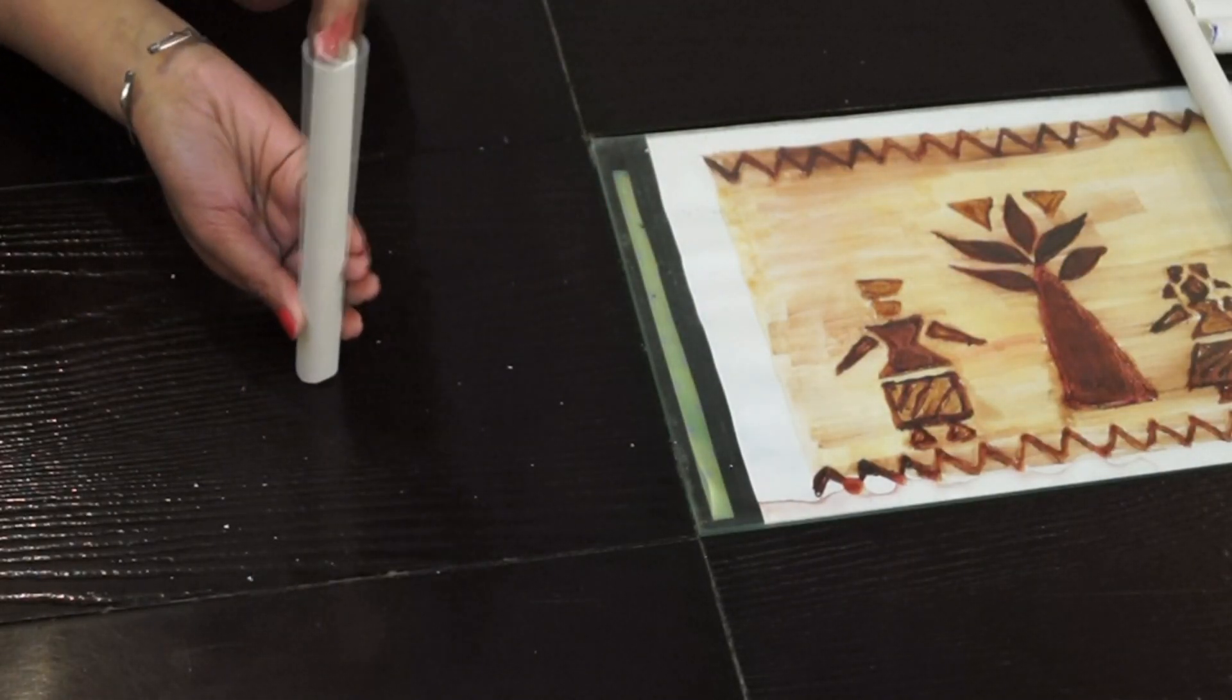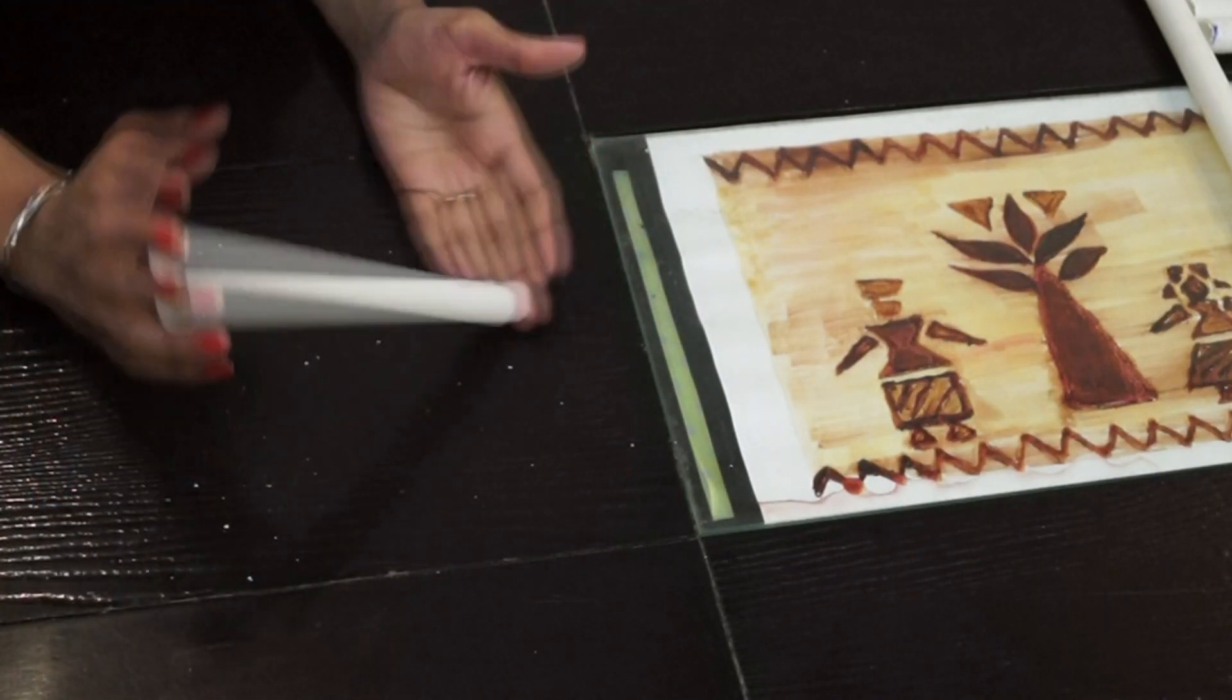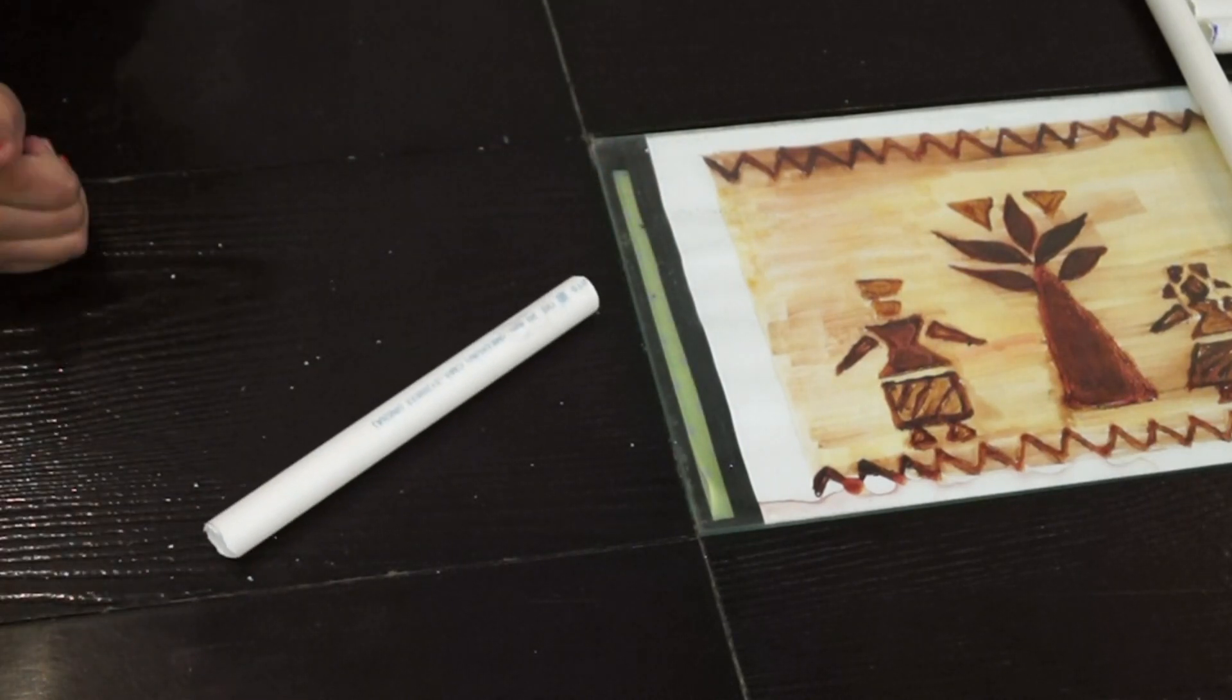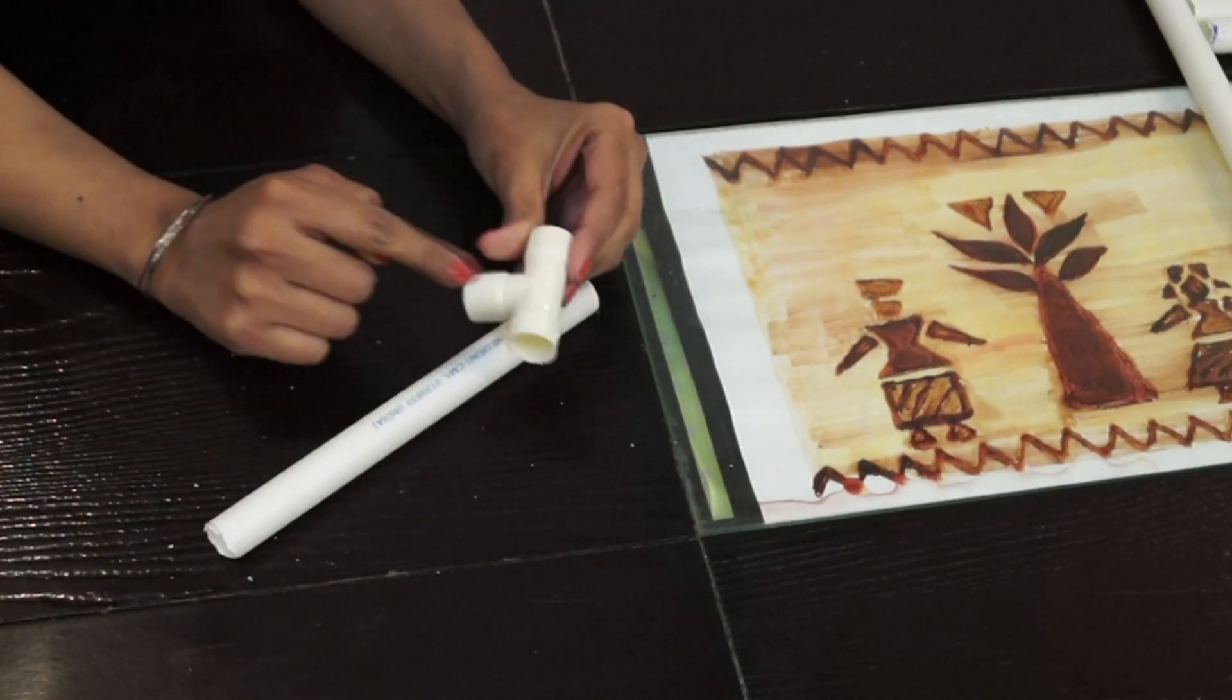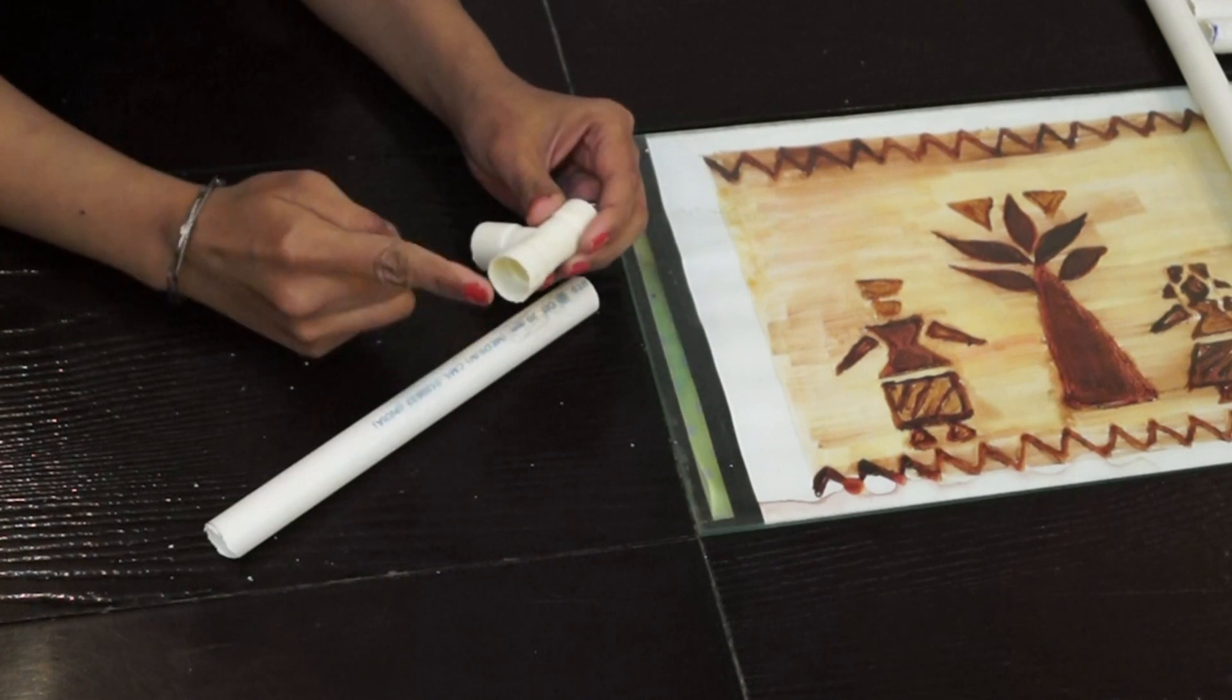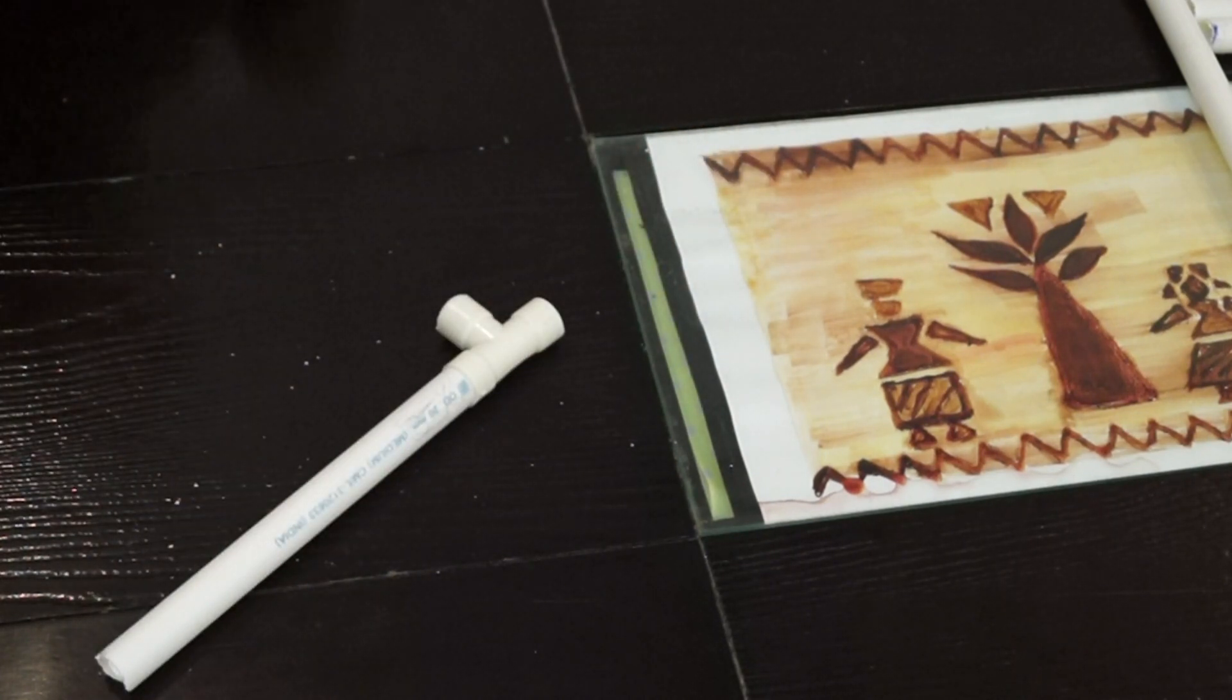First of all, take a PVC pipe which is of 10 inches. So what we are going to do, we are going to attach T-joints at both the ends. So this is the T-joint. Just simply attach it like this at one of the ends.